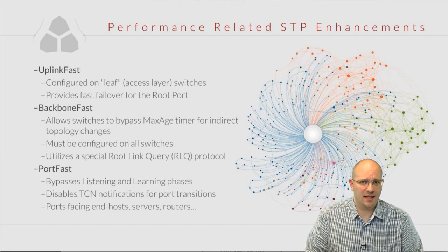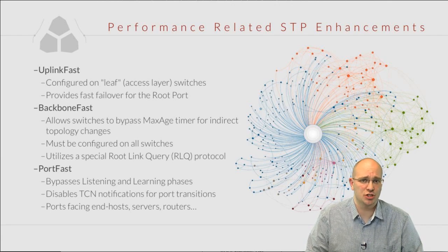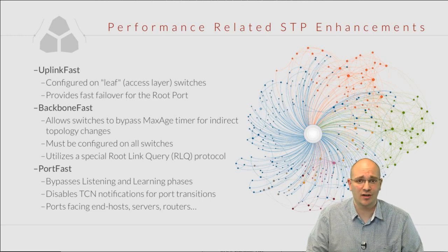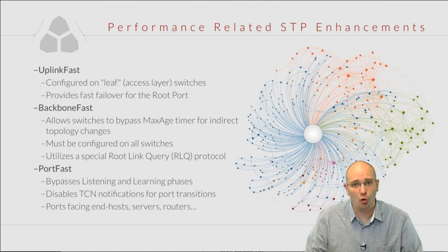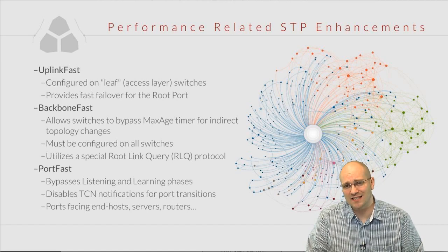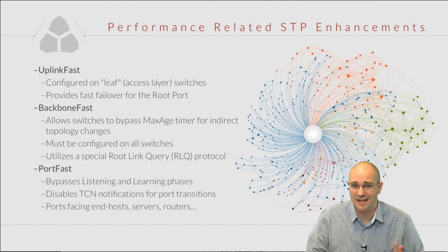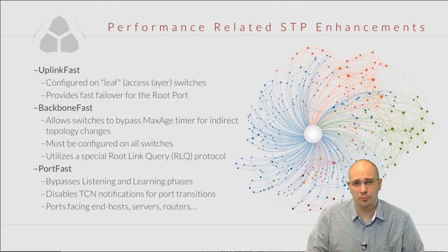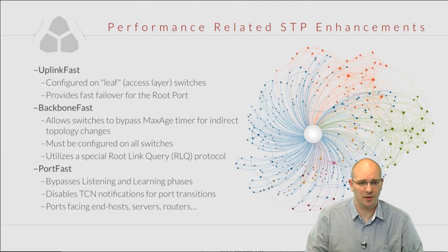Backbone fast is a feature that is designed to bypass the max age timer in a case of an indirect failure — an indirect topology change in our network. In order for backbone fast to work, it needs to be enabled on all the switches in the network. The reason for this is that it utilizes a special Spanning Tree based root link query, or RLQ protocol. I'll talk about it in greater detail in just a moment.